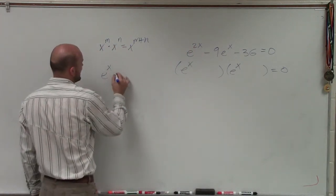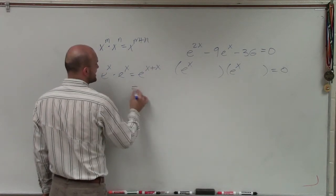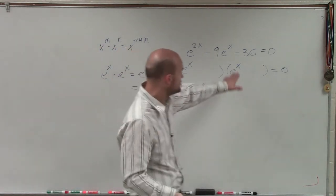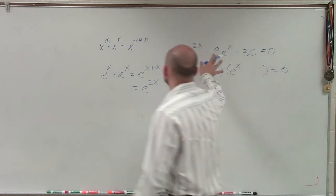Because again, e to the x times e to the x equals e to the x plus x. Well, x plus x is equal to e to the 2x. All right, so now I have to determine what two numbers multiply to give me negative 36, but then are going to add to give me negative 9.